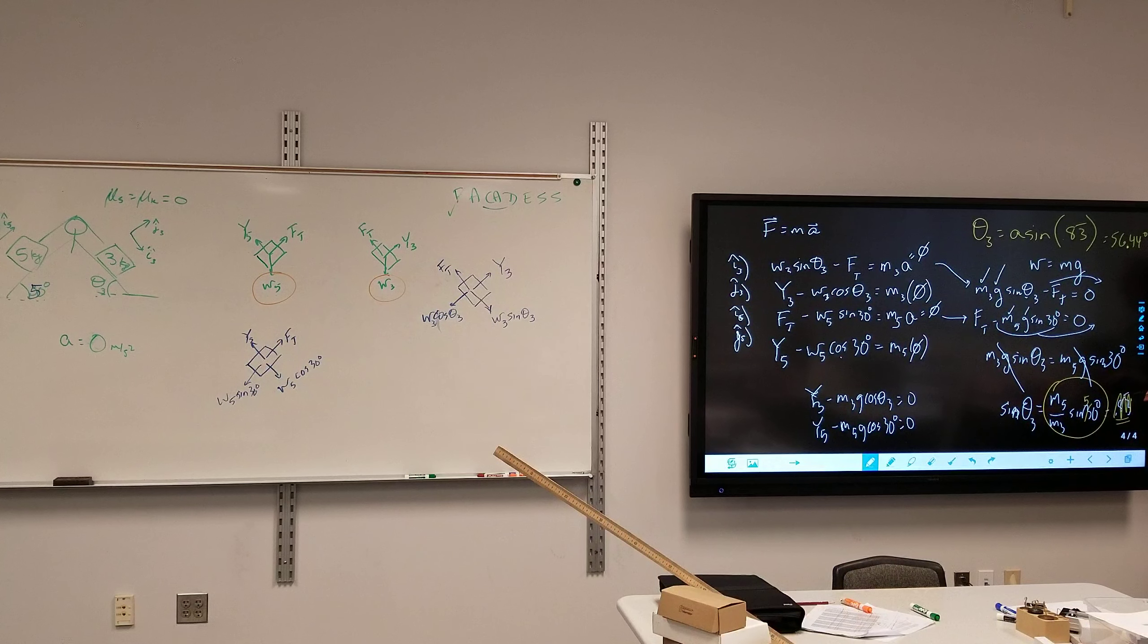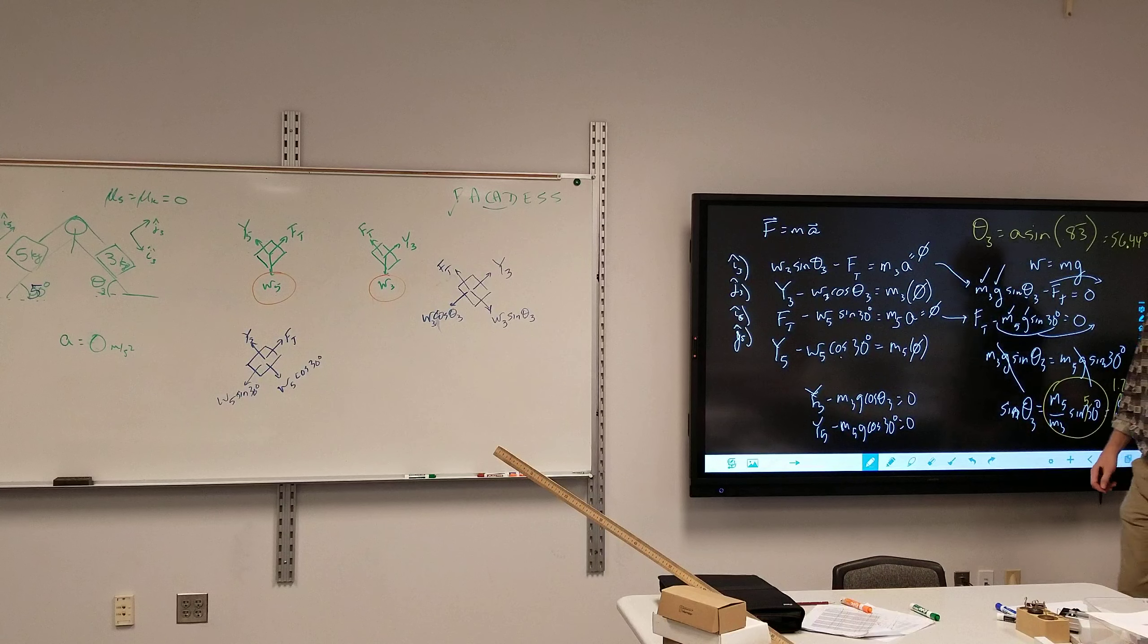5 thirds times the sine of 50 degrees is. I heard 1.28. 1.28. And so when you try to find theta 3, what would you get? Arc sine. Arc sine 1.28. Yeah, and what do you get?